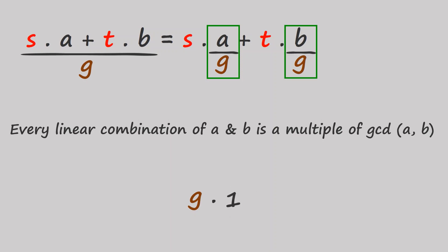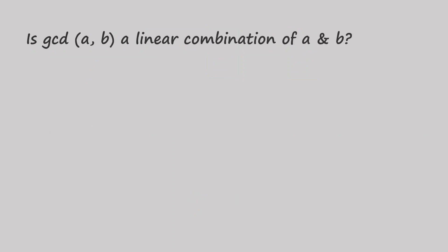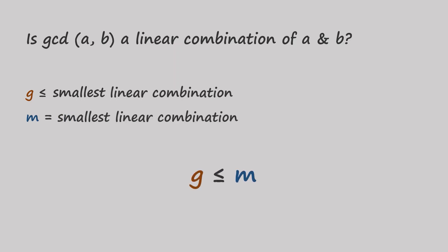Well, since G divides any linear combination of a and b, then it has to be less than or equal any linear combination. Think about the smallest linear combination we can get from a and b. G is also less than or equal this number. Let's call this number m. G is less than or equal to m. Or m is greater than or equal to G, however you want to look at it.